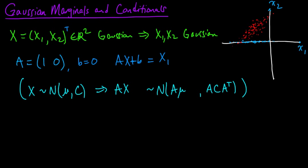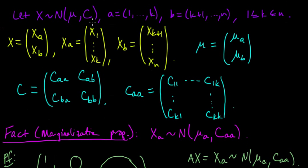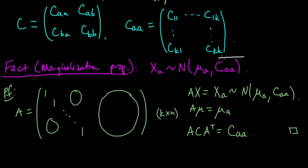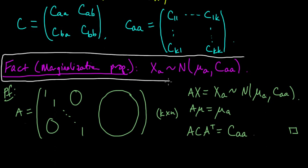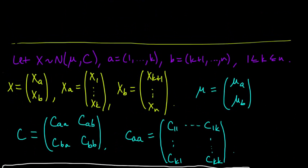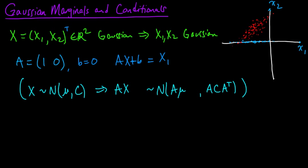In the previous video, we looked at the marginalization property of Gaussians. We saw that if you take a Gaussian and decompose it into its first k coordinates and any subset of coordinates, those marginal distributions on those subsets are Gaussian. In this video, we're going to take a look at the conditional distributions.